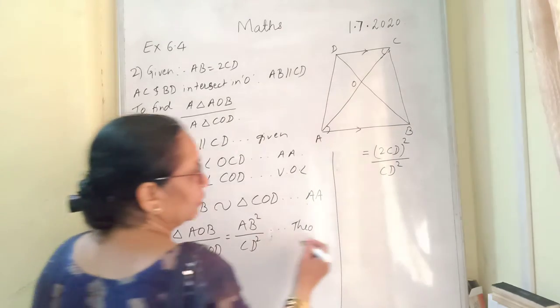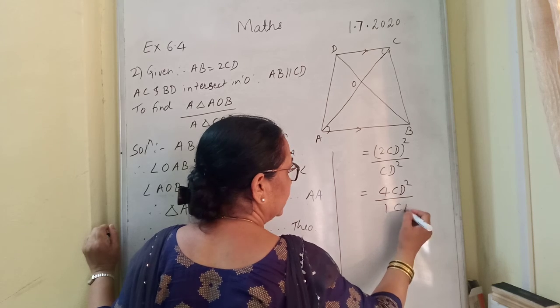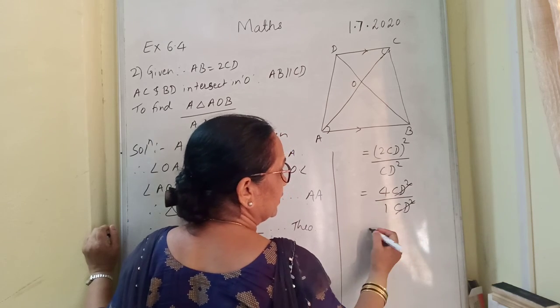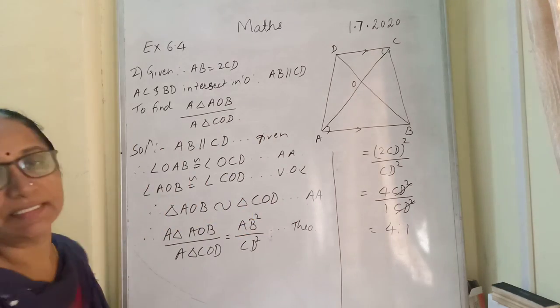So we have taken that value. That comes to 4CD square upon 1CD square. So CD square, CD square gets cancelled. 4 is to 1, that is the answer.